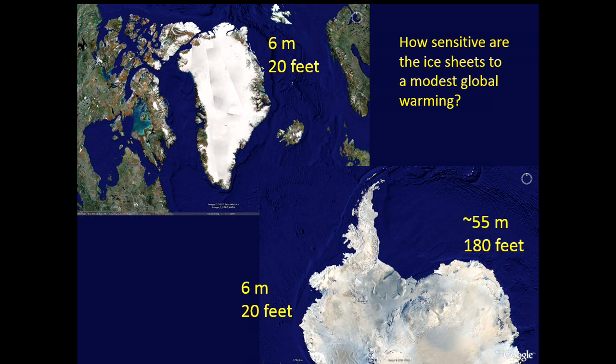Today there are two major polar ice sheets. There's the one in Greenland, which if you could hypothetically melt it all and spread it in a single layer over the ocean, sea level would rise by about six meters or 20 feet. Then in the South Pole, there's the West Antarctic ice sheet, about the same size as Greenland, and the much larger East Antarctic ice sheet — you have to go back 40 million years to find a time when that whole ice sheet melted, when sea level was about 180 feet higher than today.